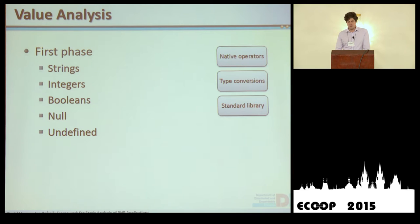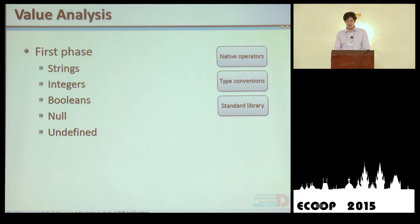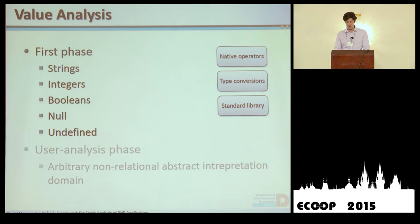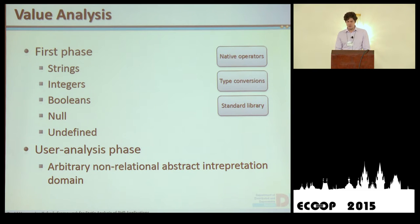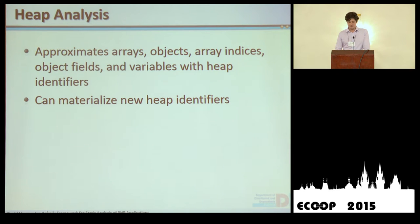For unknown functions — because some standard or library functions may not be supported or known to our framework — we assume that any value can be returned. An unknown function is therefore not a big problem. The user-phase analysis can be constructed using an arbitrary non-relational abstract interpretation domain.